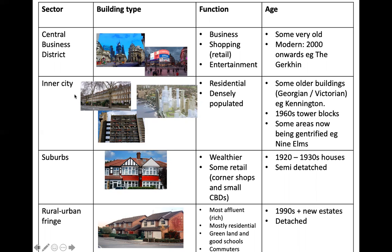Moving on to the inner city — a variety of buildings here, including older Georgian and even Victorian buildings. These were sometimes replaced and redeveloped in the 1960s, producing large 1960s tower blocks. Today we are seeing further development and gentrification of some of these areas. Gentrification is the process of wealthier people moving into these older, traditionally working class neighbourhoods, redeveloping them, raising property values and the desirability of the area. One example is Nine Elms and the Battersea-Vauxhall area. Whatever the area, these zones are usually residential and very densely populated.